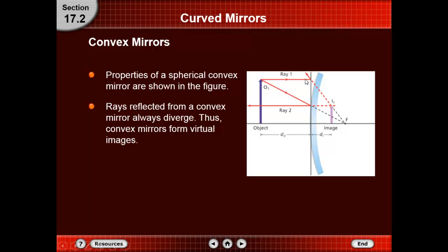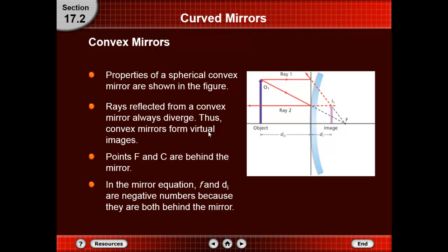Points F and C are behind the mirror, so in the mirror equation F and di are negative numbers because they are positioned behind the mirror. The value of F and the value of the distance of the image are negative values because they are behind the convex mirror.